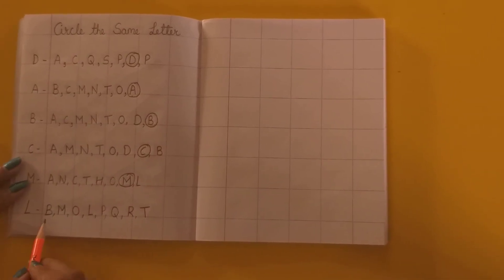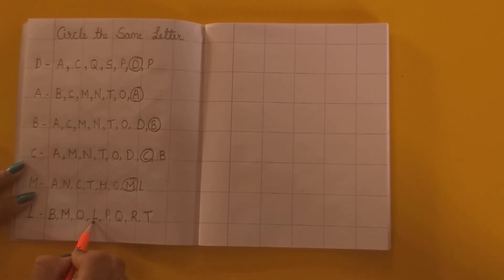Now L. Yeh B. Yeh M hai. Yeh O hai. Yeh raa. Aas toh jaldi mil gya L humko.